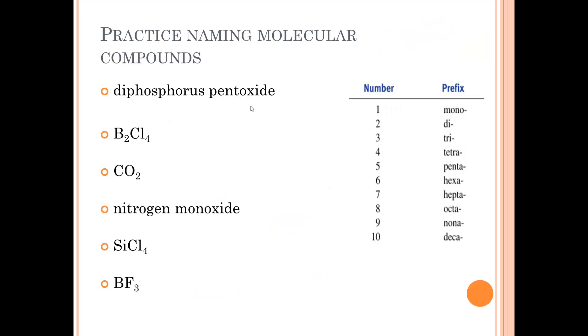So let's do some practice. Pentoxide diphosphorus. So that means I have phosphorus, and because di is two, I have two phosphorus. Pentoxide. Oxygen. Penta is five.